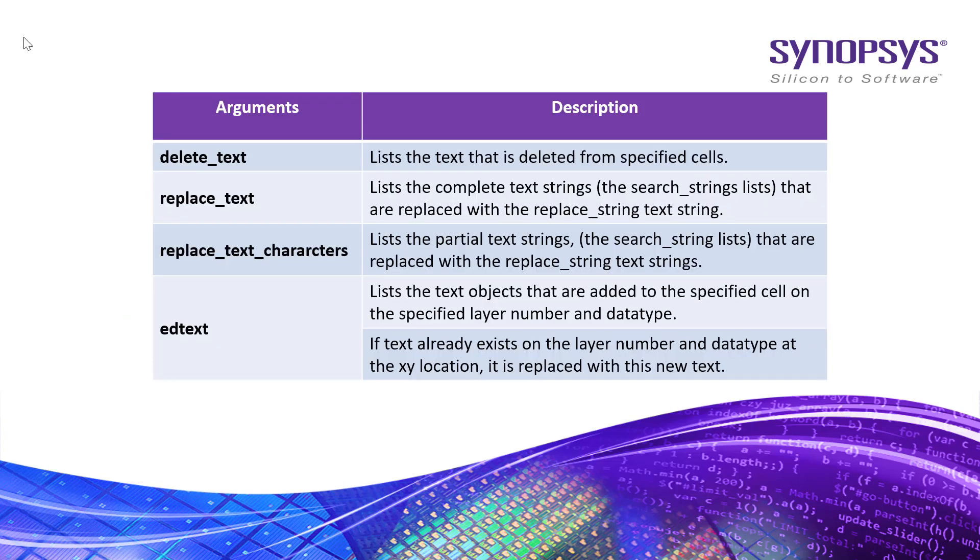The delete_text argument lists the text that is deleted from specified cells. By default, the text is not deleted.